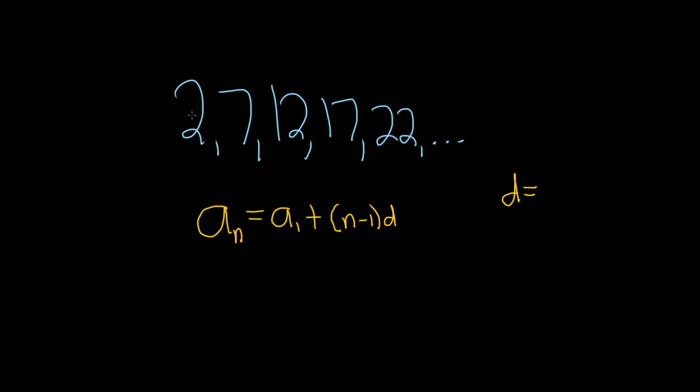For example, to go from 2 to 7, we have to add 5. And then notice it's that same number, right? You add 5 to 7 to get 12, add 5 to get 17, add 5 to get 22. So you just keep adding 5.